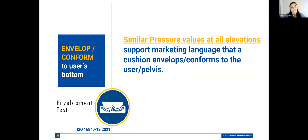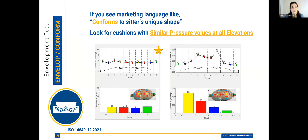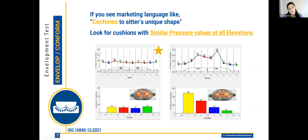You look for similar pressure values across all areas of your bottom. Similar pressure values at all elevations support marketing language that a cushion envelops or conforms to the user and pelvis. If you see marketing language like 'conforms to the sitter's unique shape,' you would look for cushions with similar pressure values at all elevations. You can see results of one test where pressures are very evenly distributed across those elevations, versus another where there are high pressures at the ITs and high pressures in the red region around the IT, with lower pressures at the trochanter level. We would want something more like the star on the good side of the slide.